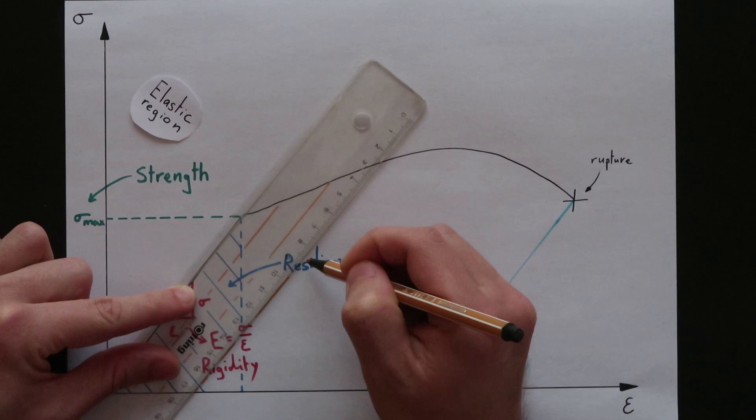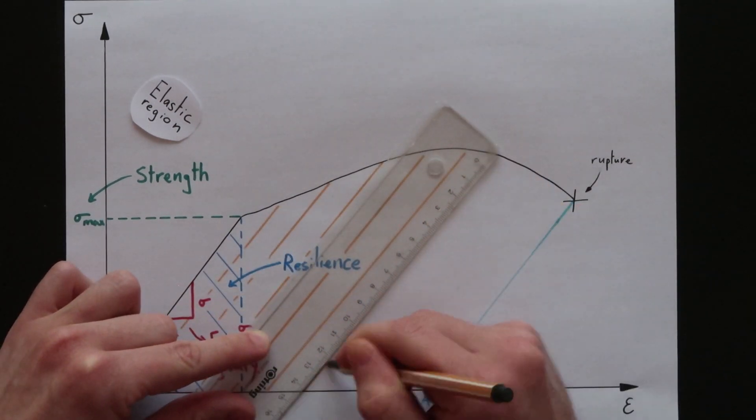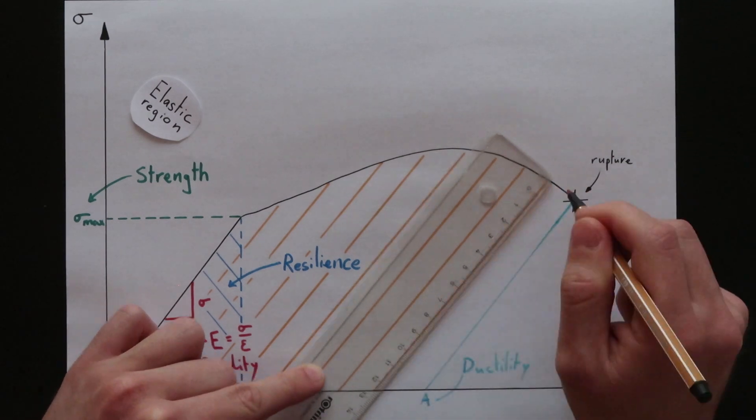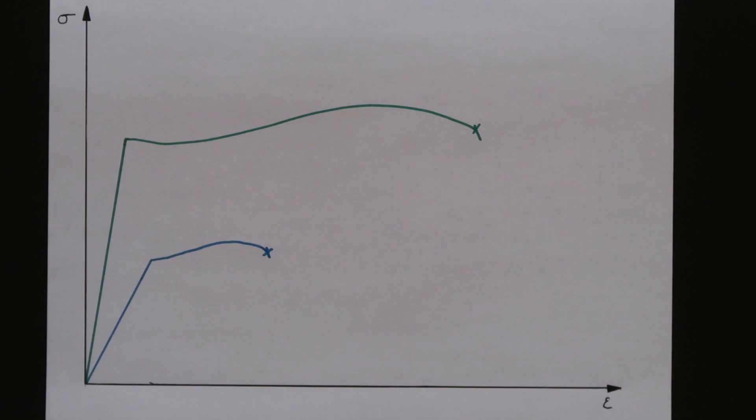And last but not least toughness. Toughness is the ability of a material to absorb a certain energy before complete rupture. This property is represented by the area under the whole curve. Between these two curves which material is tougher?